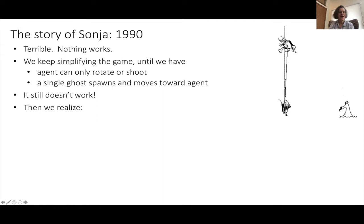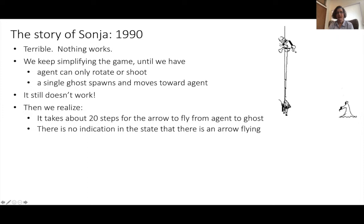This is now ridiculous. We know the optimal strategy is very simple, nothing is working. Then we realized that it took about 20 time steps for the arrow, when the agent launched it, to fly over to the ghost. There was a really long temporal credit assignment problem. Not only that, there was no indication in the video game that the arrow was flying. So the problem was partially observed. The state representation was enough to encode the optimal policy, but it didn't render the game Markov.